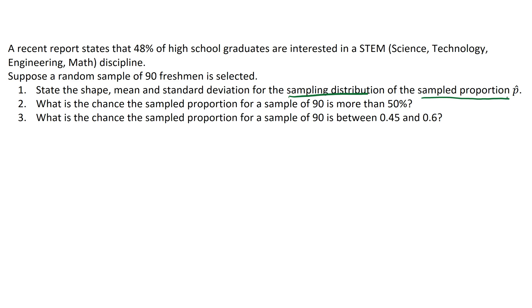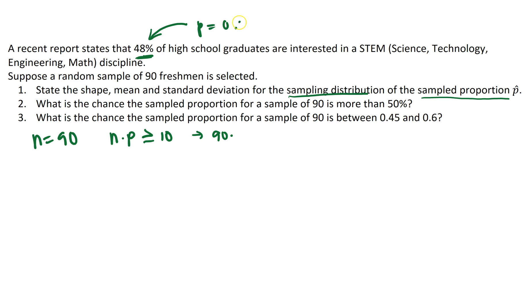The answer is yes. We can apply the central limit theorem if n equal to 90 is large enough. We'll know that this is going to be normally distributed if n times p is greater than or equal to 10. In this case, n is equal to 90, and p is our population proportion, which is equal to 0.48 — that's where we get the 48% from the recent report. So when we multiply these, 90 times 0.48 is equal to 43.2, so we're good to go here.